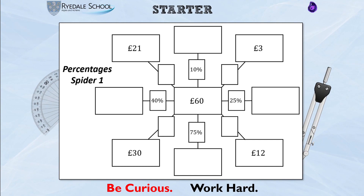Before we get started, today we are going to be doing a few questions that involve some percentages. We haven't done any percentage work since Year 7 — in fact, percentages are our next topic after probability. So what I'd like you to quickly think about for a couple of minutes is this percentage spider, where 60 pounds represents everything. What would these other percentages be, and what would the values of the money around the edge represent?